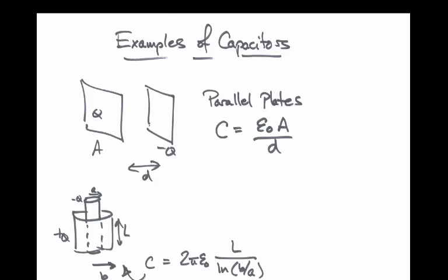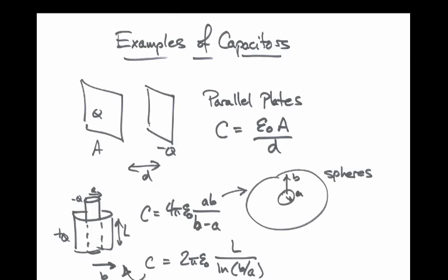The last case I'll ask you to remember is that of two concentric spheres. If I have two concentric spheres, if the inner one is radius A and the outer one is radius B, the capacitance of this system is 4π epsilon naught times the ratio of AB over B minus A.